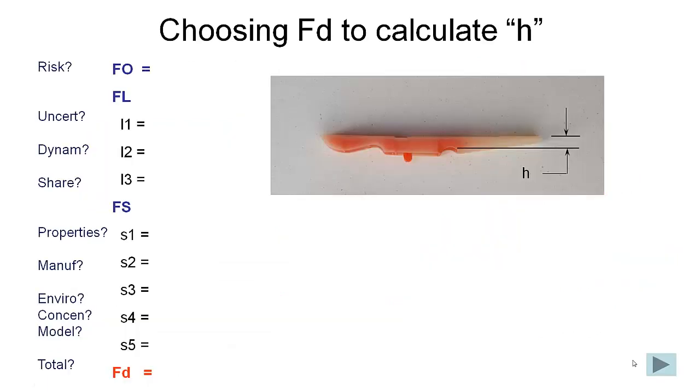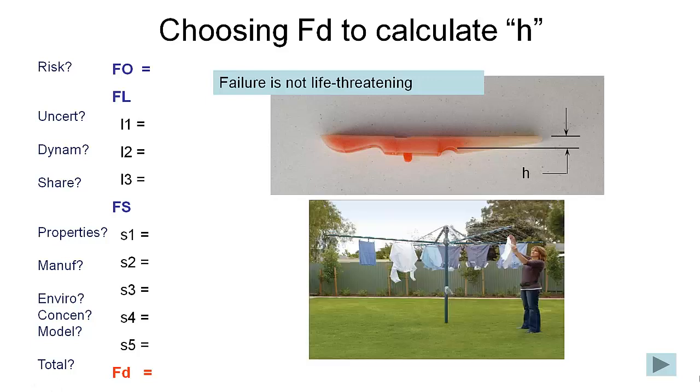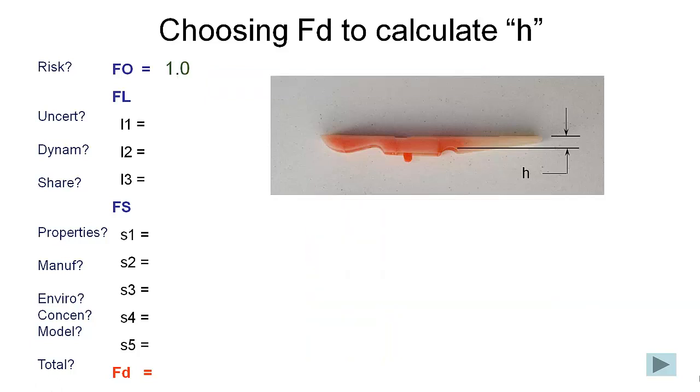So taking the example of our peg, let's look at how we might choose our safety factor to be able to calculate this thickness here over the fulcrum of the peg. So in terms of the risk, the failure of our peg is not going to be life-threatening, so that one can be a 1. So we're not going to have an additional safety factor due to that. If it fails, maybe our washing falls off the line, but that's not a real problem, apart from having to do our washing again.